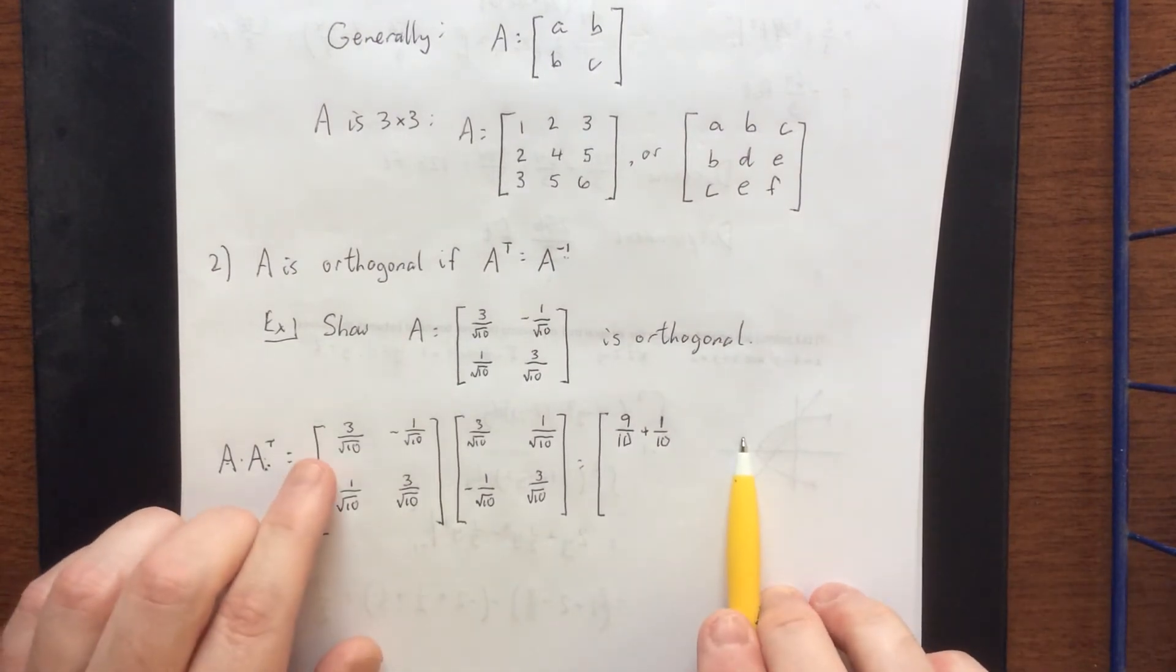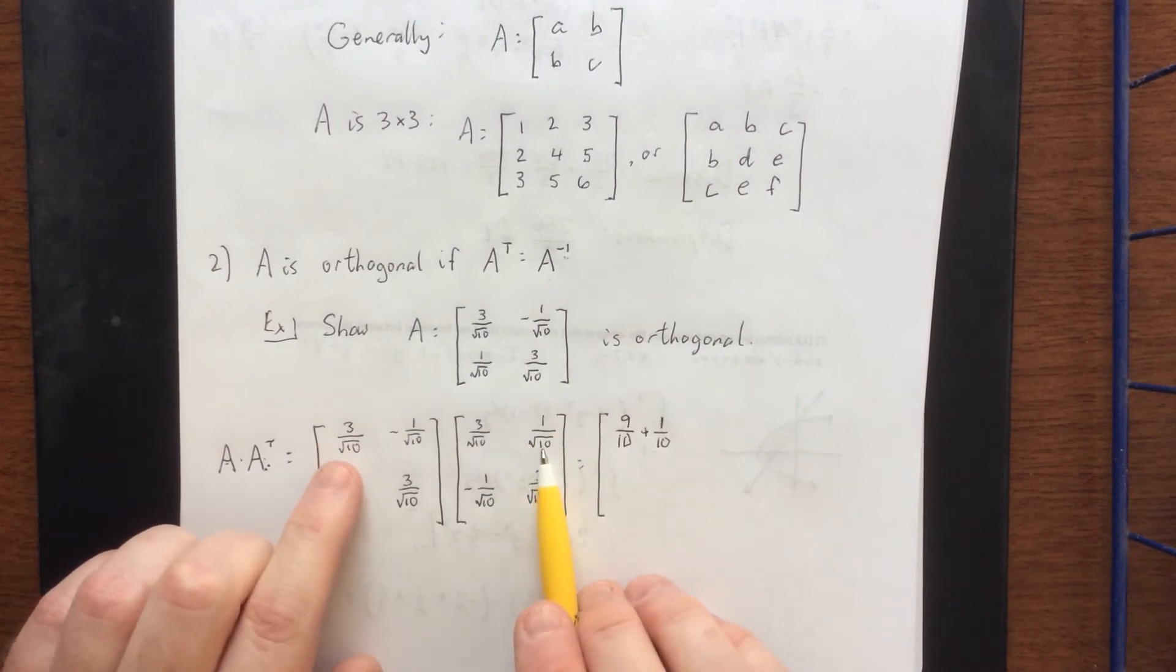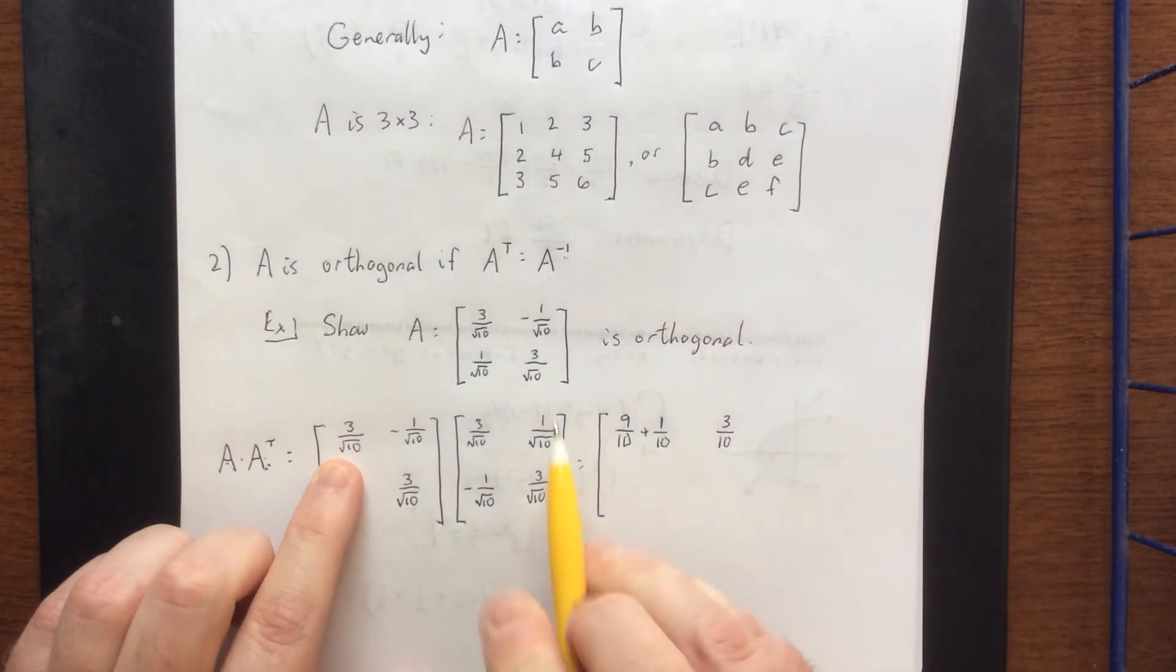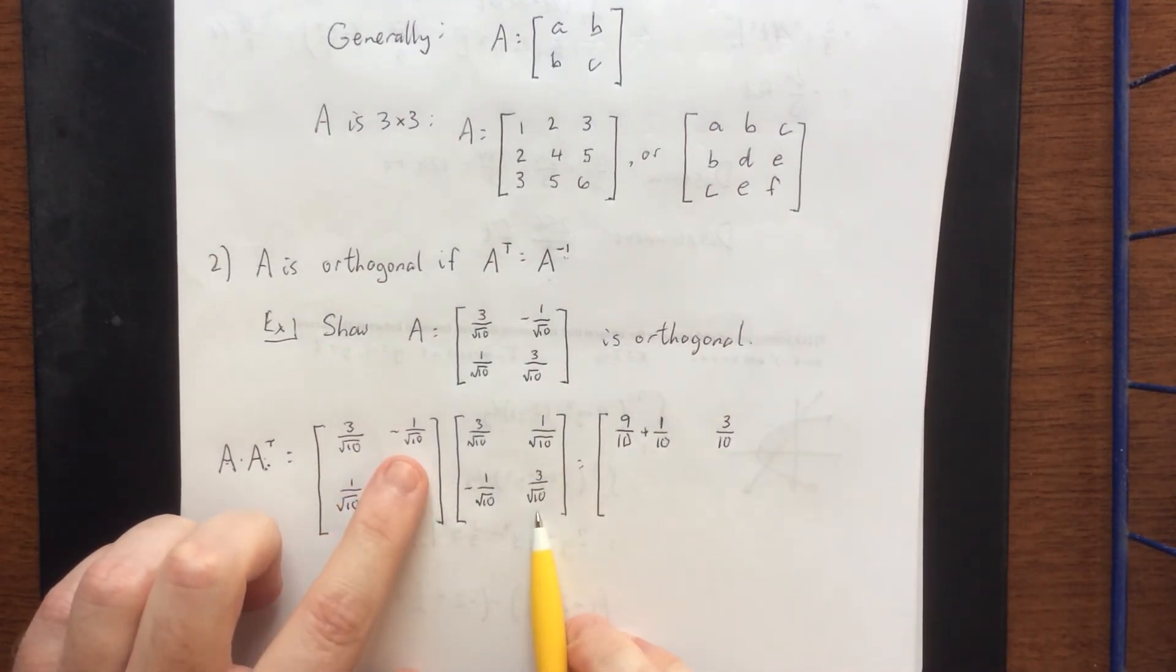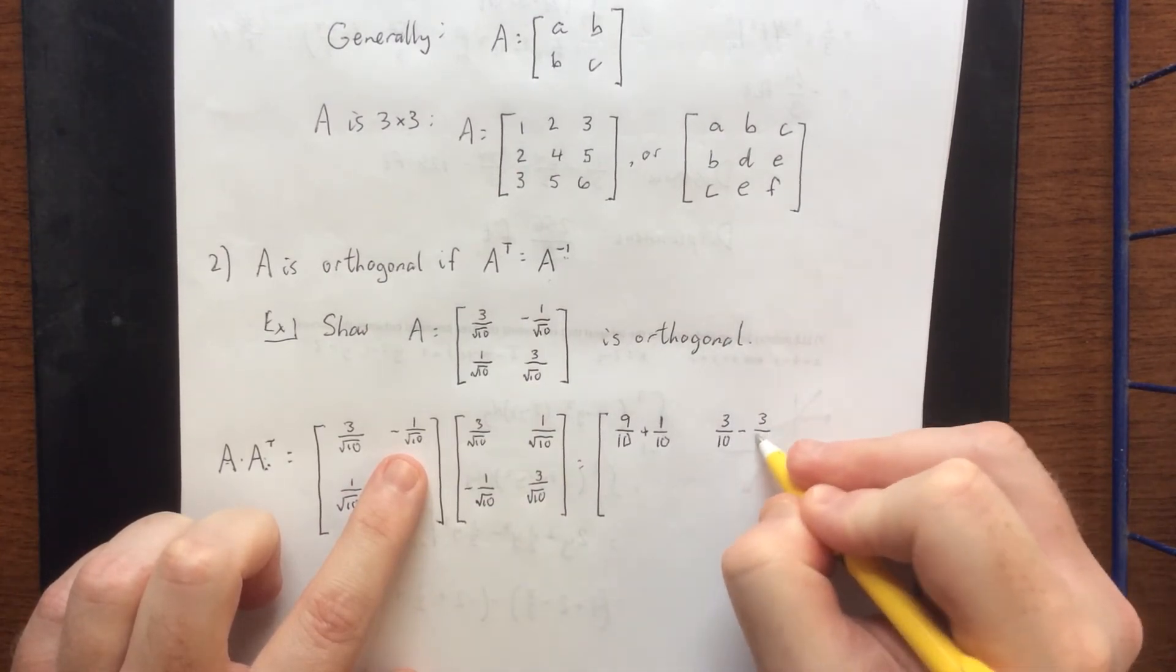For the 1, 2 entry, this will be the first row times the second column. So 3 over the square root of 10 times 1 over the square root of 10 would be 3 over 10. Then negative 1 over the square root of 10 times 3 over the square root of 10 will be minus 3 tenths.